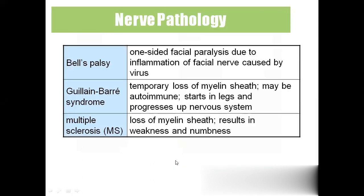Coming to nerve pathology: 'Bell's palsy' — if one side of the face alone gets paralysis due to inflammation of the facial nerve, which is the seventh cranial nerve, we call it Bell's palsy. Mostly people get this viral infection during cold climate — for example, those who go for a walk at 4 or 5 o'clock in the morning may get Bell's palsy due to the cold.